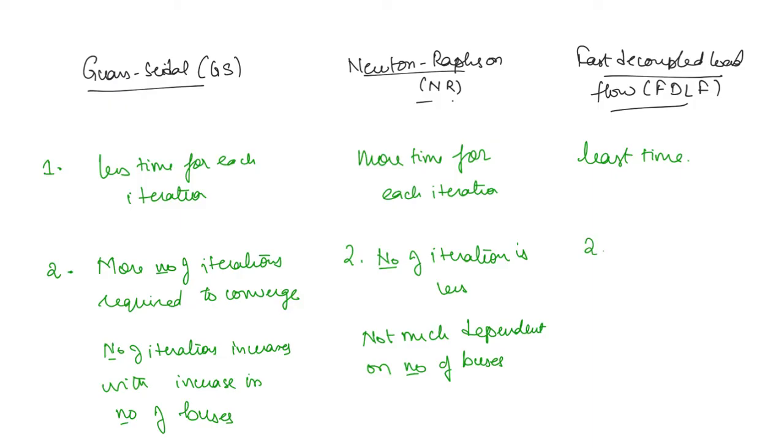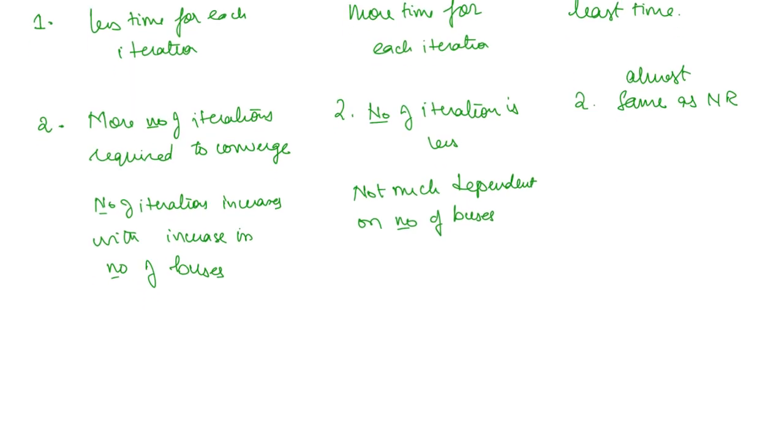Fast decoupled load flow is going to take almost the same as the Newton-Raphson method. Next, accuracy. The Gauss-Seidel is the least accurate while the Newton-Raphson is the most accurate. This is moderately accurate.